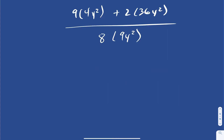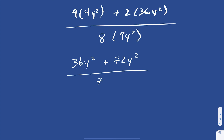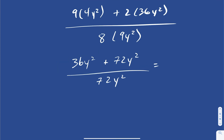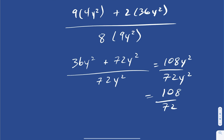Simplifying, we get 36y squared plus 72y squared over 72y squared. These are like terms, so 36 plus 72 gives us 108y squared over 72y squared. The y squareds cancel, and dividing top and bottom by 36, this reduces to 3 over 2, which is our final answer.